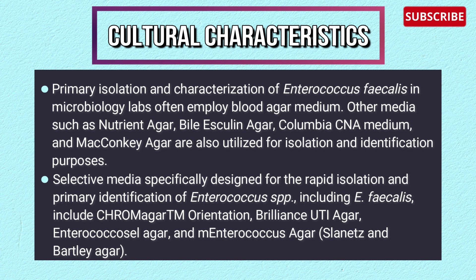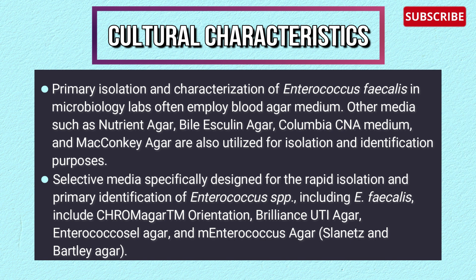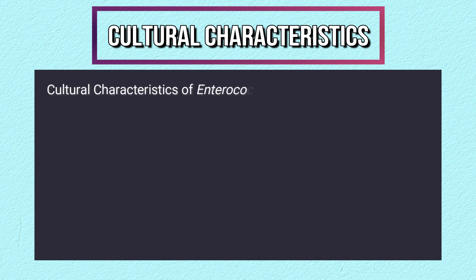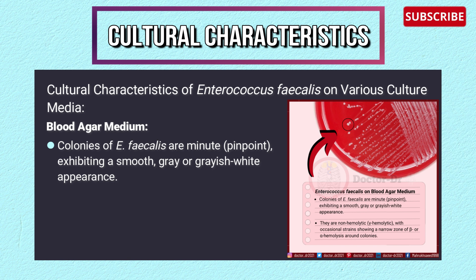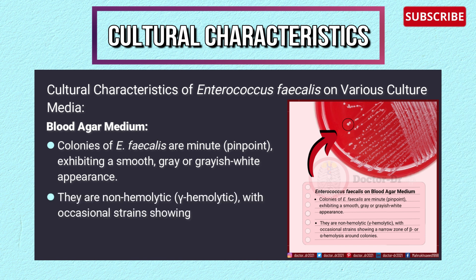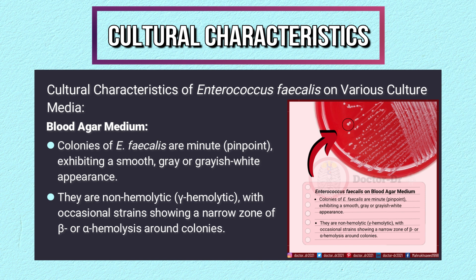Selective media designated for rapid isolation and primary identification of Enterococcus species include CHROMagar, Brilliance UTI agar, Enterococcus CNA agar, and m-Enterococcus agar, Slanetz and Bartley agar. On blood agar medium, colonies of Enterococcus faecalis are minute pinpoint colonies exhibiting a smooth gray or grayish-white appearance. They are non-hemolytic (gamma hemolytic), with occasional strains showing a narrow zone of beta or alpha hemolysis around colonies.